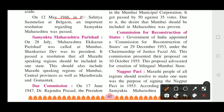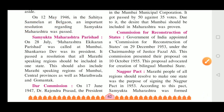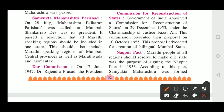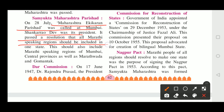On 12th of May 1946, in the Sahitya Sammelan at Belgaon, an important resolution regarding Samyukta Maharashtra was passed. It passed a resolution that all Marathi-speaking regions should be included in one state. This should also include Marathi-speaking regions of Mumbai, Central Provinces, as well as Marathwada and Gomantak.